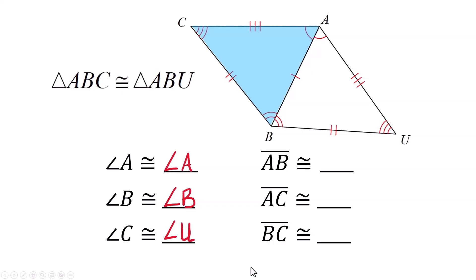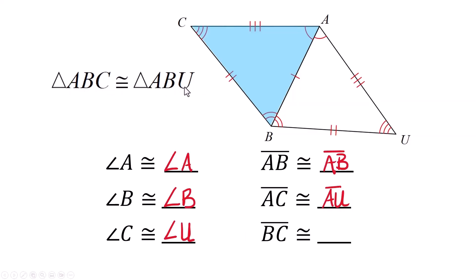Side AB has to be congruent to side AB as well — both triangles share this side. Then A to C is marked with three little marks, so it must be congruent to AU — and in the congruency statement you can see AC and AU. BC is in the first triangle and BU is in the second triangle — B to C has two marks and BU has two marks, so that's how that works.